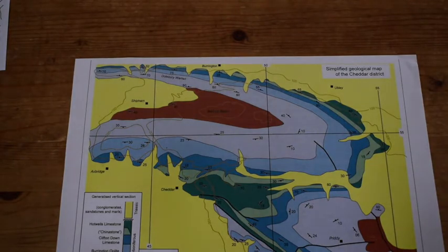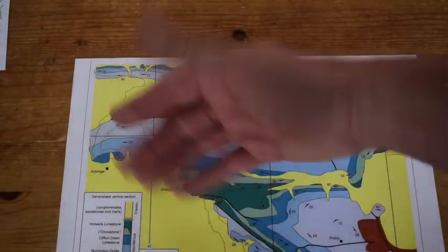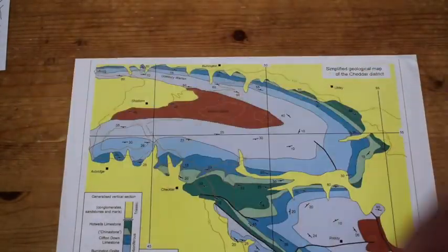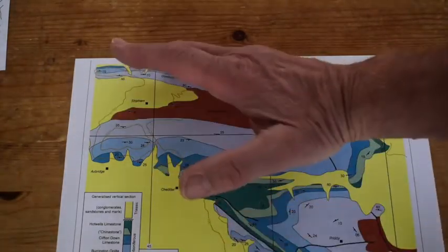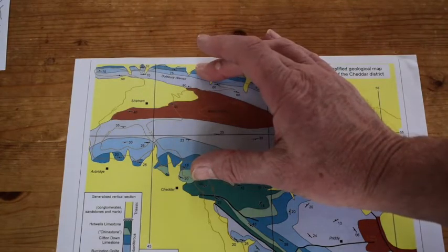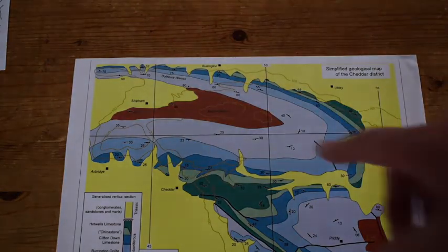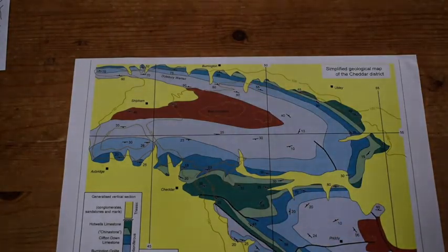Well it's worth thinking a little bit about what sort of fold we've got here first. And I can see from these bedding symbols that the rocks here are dipping this way towards the south, and here in the north they're dipping north, so the layers are coming over into an antiformal structure. I can also see that there are older rocks in the core, so this antiform is also an anticline.